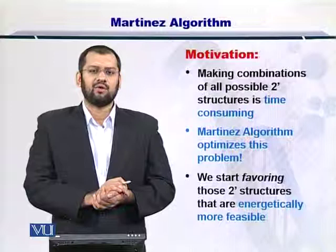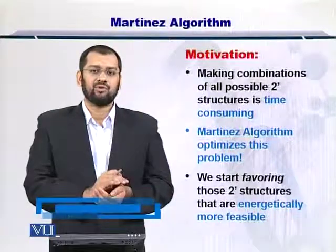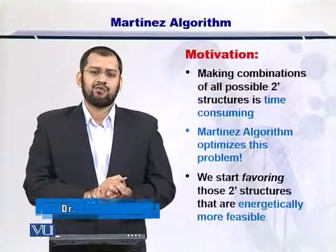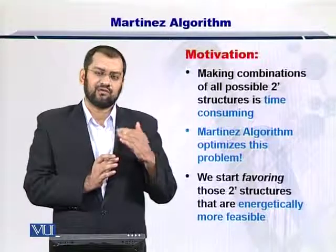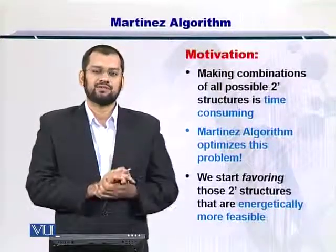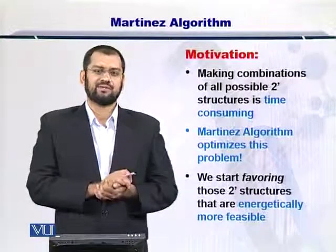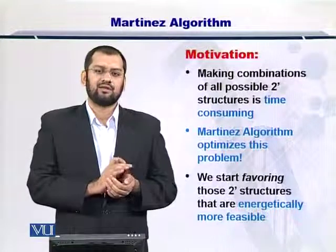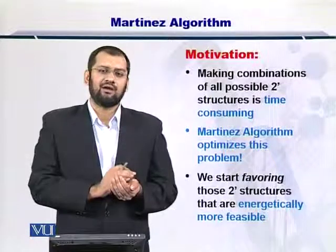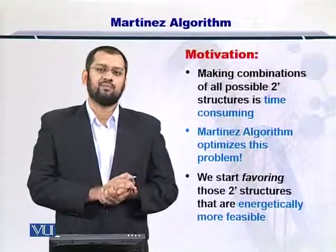As I just mentioned, making all the possible combinations for complementary nucleotides is a time-consuming problem, and we need to optimize this — Martinez algorithm tries to do exactly that. The philosophy of Martinez algorithm is simply that if more energy is given out as a result of the formation of a secondary structure, such as a hairpin loop, then we favor such structures. However, if there is a smaller hairpin and lesser energy is given out, we do not favor that structure as much. In this way, secondary structures that give out the most energy are favored, while those that give out less energy are less favored.